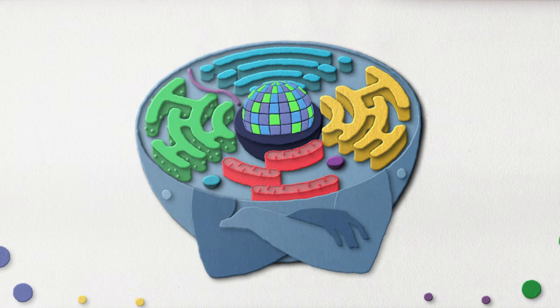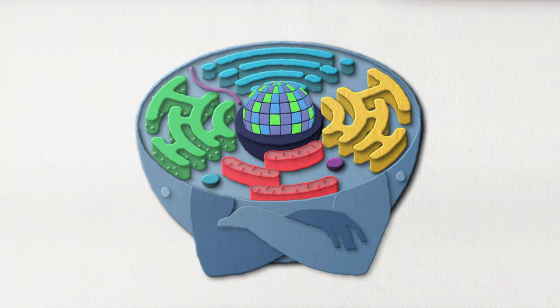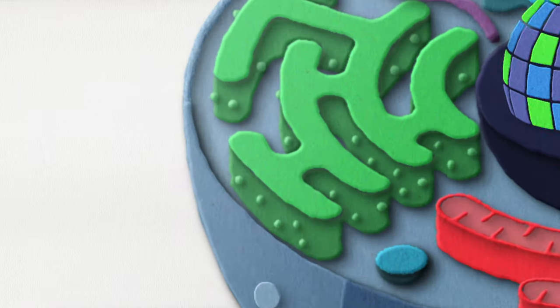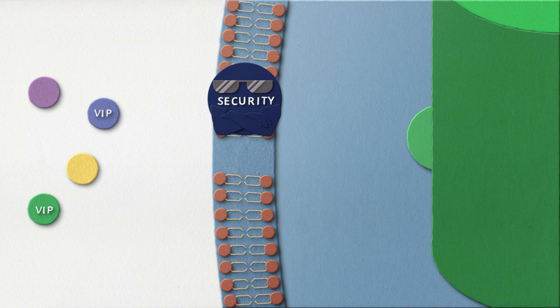However, only certain people or substances get to participate in the fun. The cell is a big bubble, and stationed along every inch of the perimeter of the bubble, arms crossed and presence known is the security guard or cell membrane.